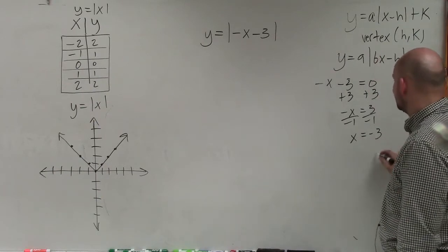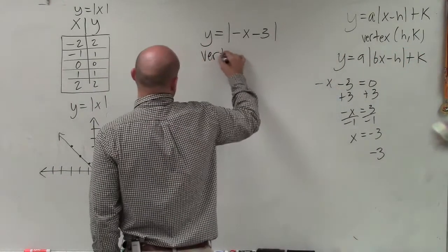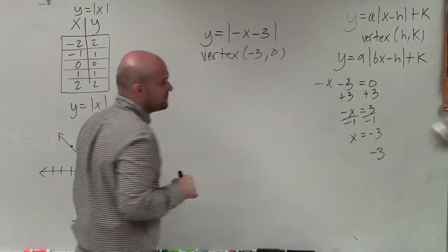So actually, my vertex is at negative 3. So I can say vertex is actually at negative 3. And since I'm not adding anything for my k, it's negative 3, 0.